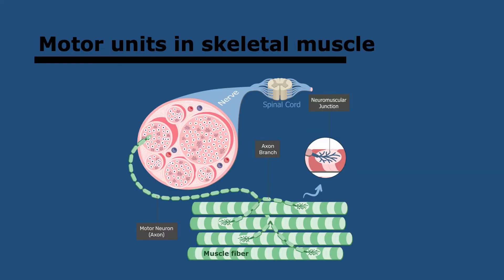Now we're going to look at skeletal muscle because it's essential for movement. Skeletal muscles are made of striated muscle fibers, and these contract when they're stimulated by a motor neuron, which uses the neurotransmitter acetylcholine across the synapse. The synapse in this case is called a neuromuscular junction. One motor neuron is normally branched to stimulate many different muscle fibers, and this helps coordinate contraction. A motor unit is a single motor neuron together with all the muscle fibers that it stimulates.